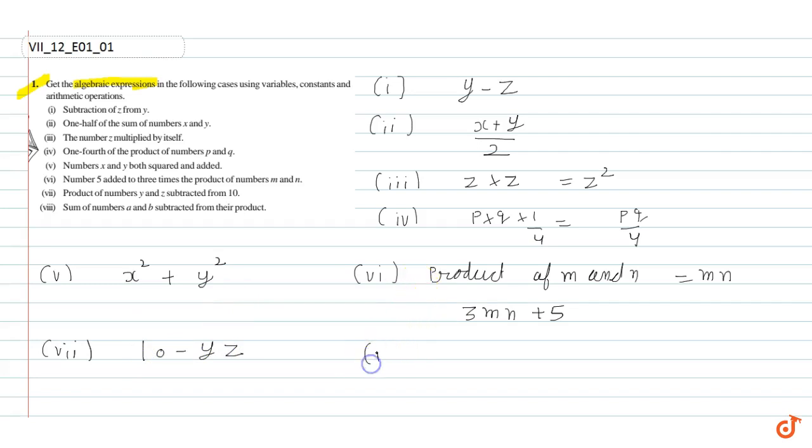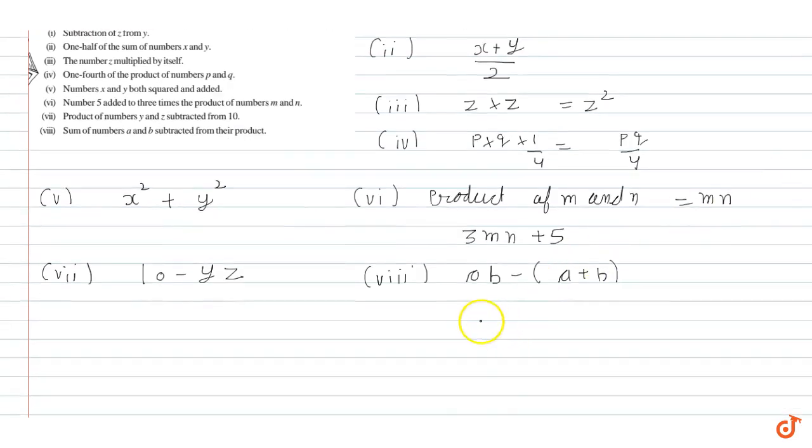The last part of this question: sum of numbers a and b subtracted from their product. So we have the product of a and b, and we subtract their sum from it. This gives us ab minus (a plus b). When we simplify, this is equal to ab minus a minus b. So this is the answer for question number one.